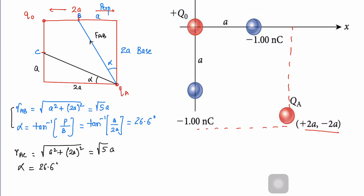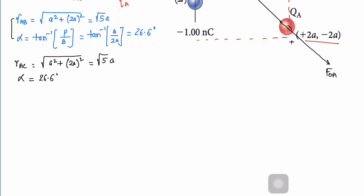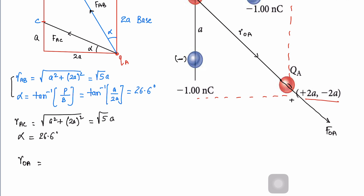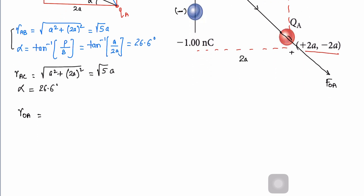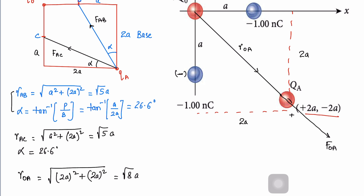You need to understand why I'm putting these directions here. The charge here is negative, and this charge is positive — force of attraction. Here also negative and positive — force of attraction. The third major point: between q_naught and q_a there is a force of repulsion, so it moves out — F_oa. Now find r_oa. This distance is 2a and this distance is 2a, so r_oa = √(2a² + 2a²) = √8·a.